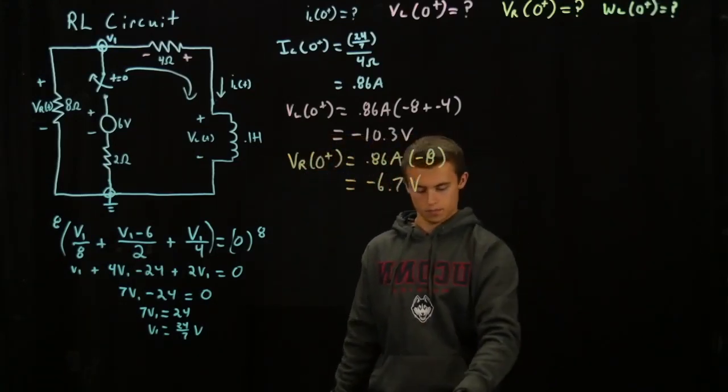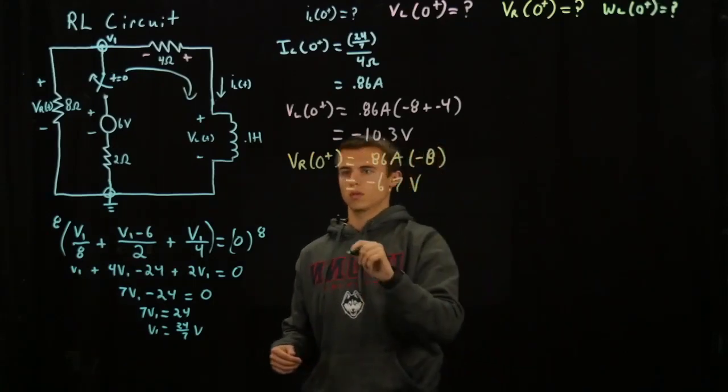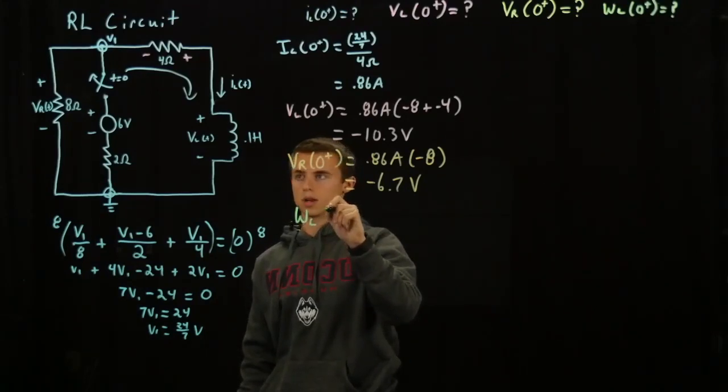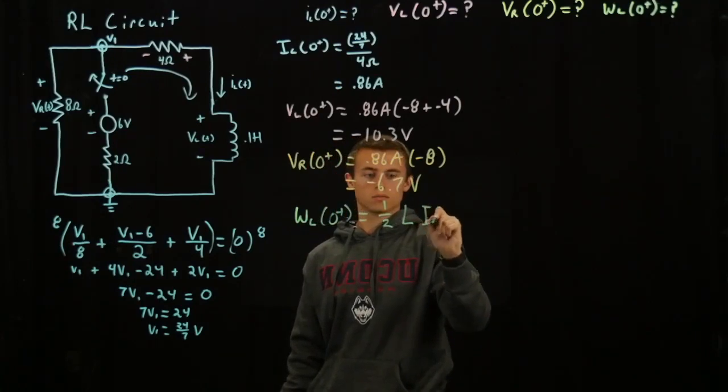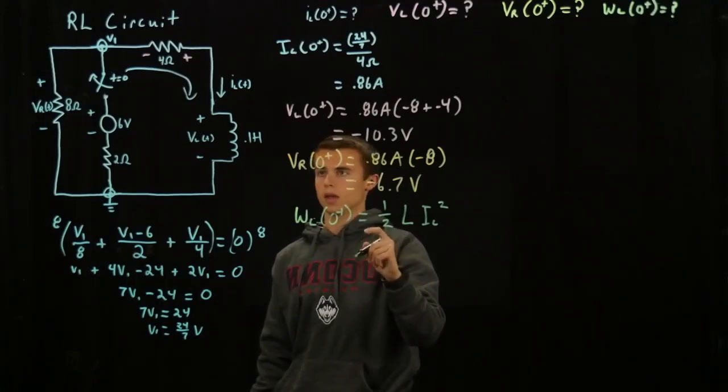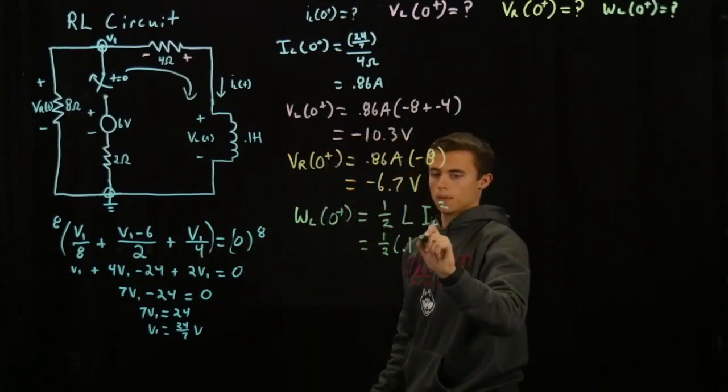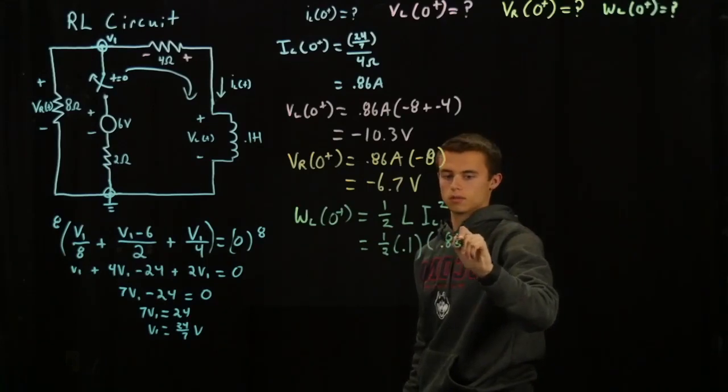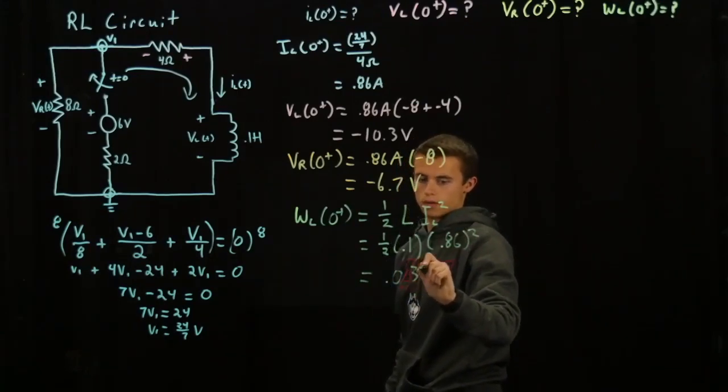And then to get the power through the inductor, we'll make it W through the inductor at time 0 plus. It's equal to one half L times I_L squared. And we already know all of these values, we've just solved for them and it's also what's given to us. So one half times 0.1 Henry, and the current through the inductor is 0.86 amps squared. So on this you will get 0.037 joules.